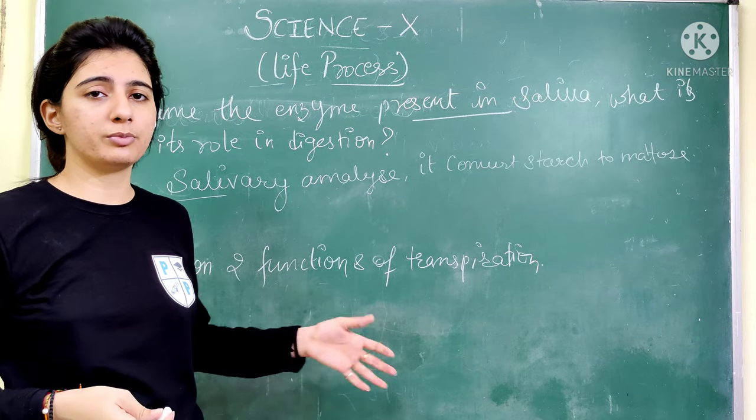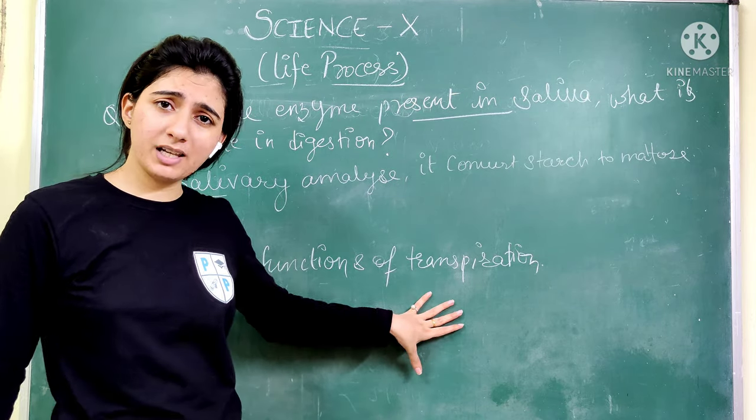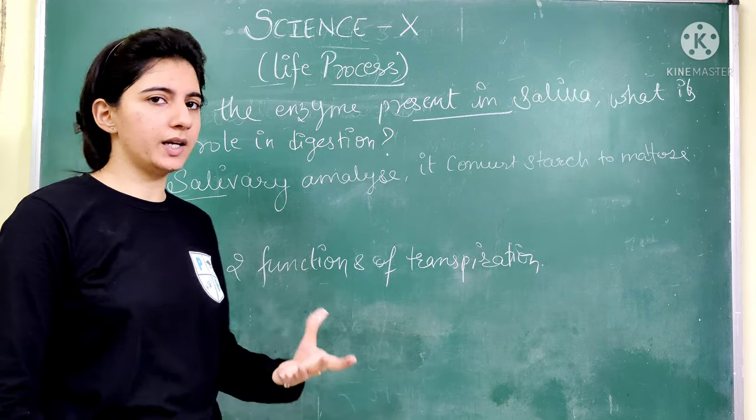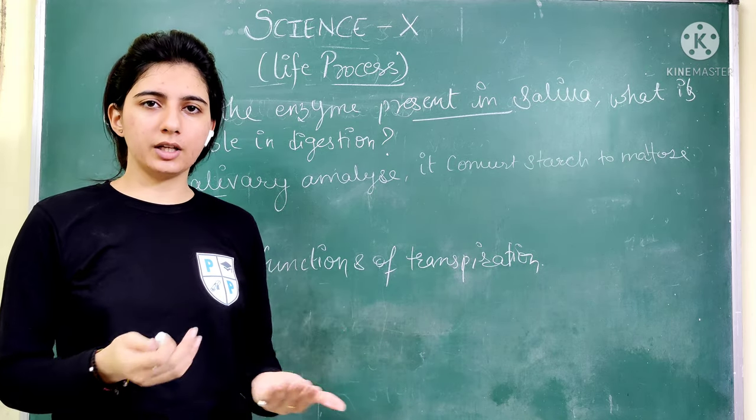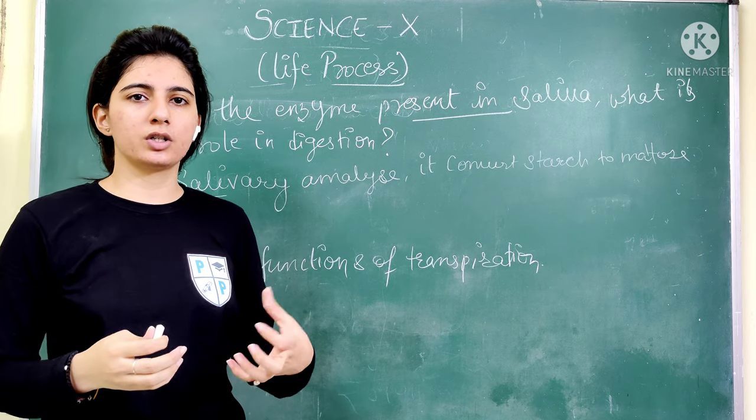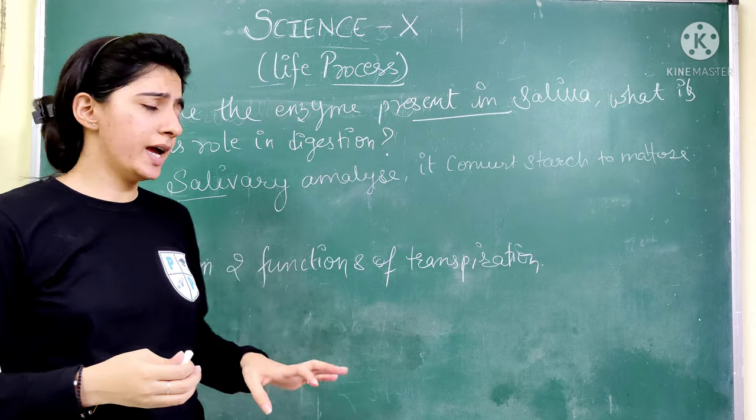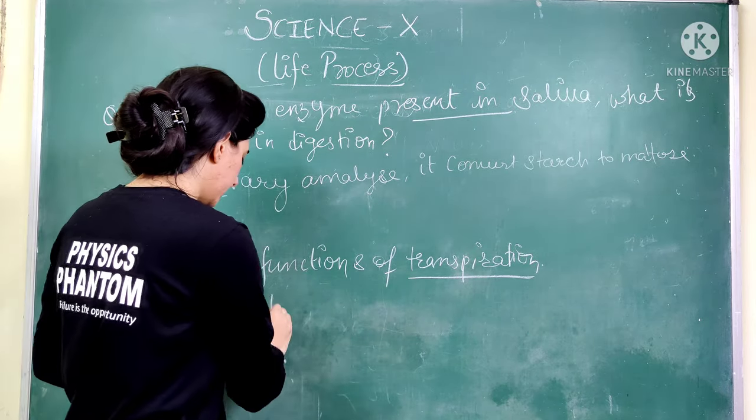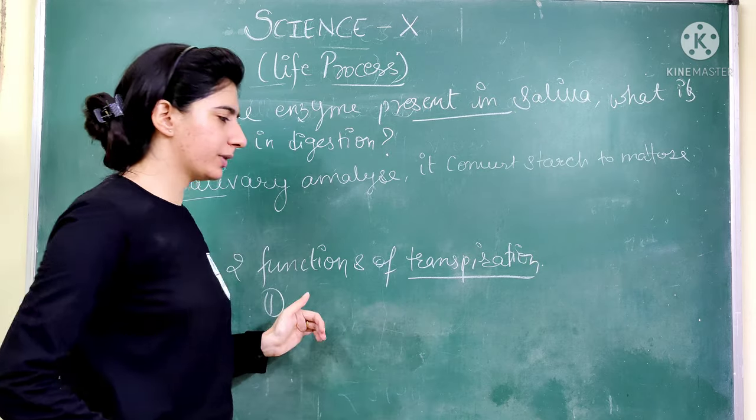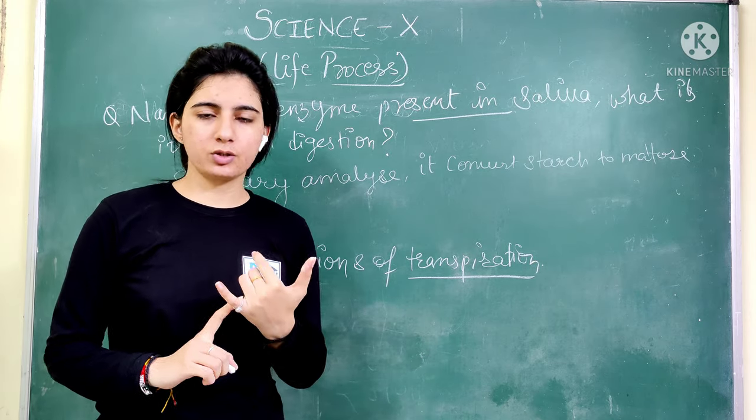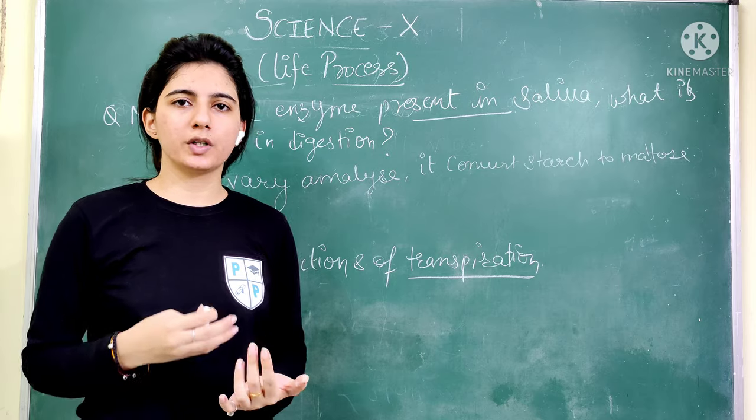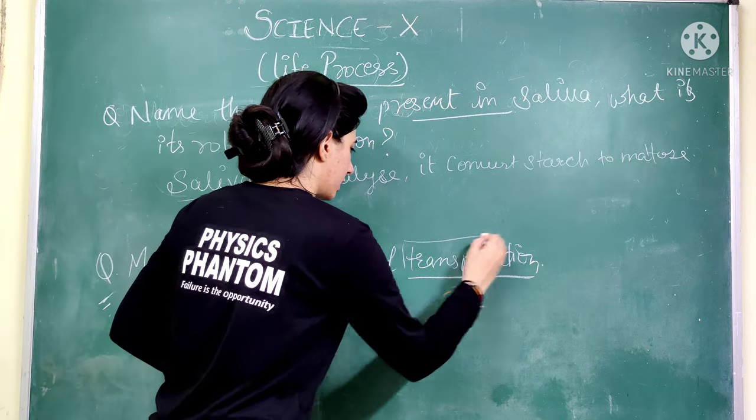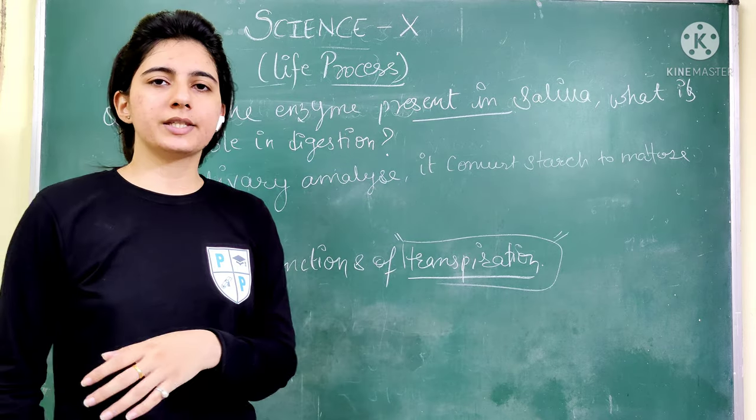The next question is: mention two functions of transpiration. What is transpiration? It is a process that is present in plants. When we talk about evaporation in the atmosphere, transpiration is a very important process. In the first point, transpiration helps in the absorption plus the upward movement of water and minerals from roots to the plant.